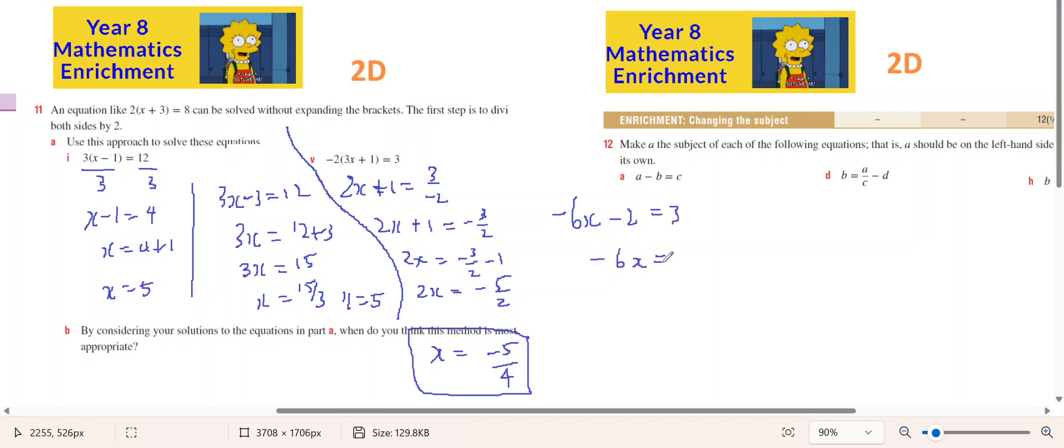Minus 6x equals 3 plus 2, minus 6x equals 5. x equals minus 5 on 6.